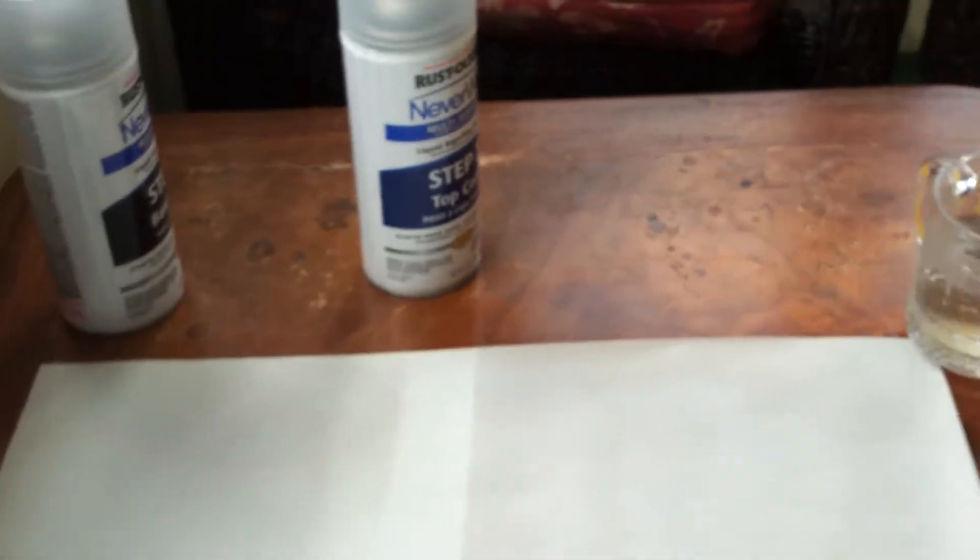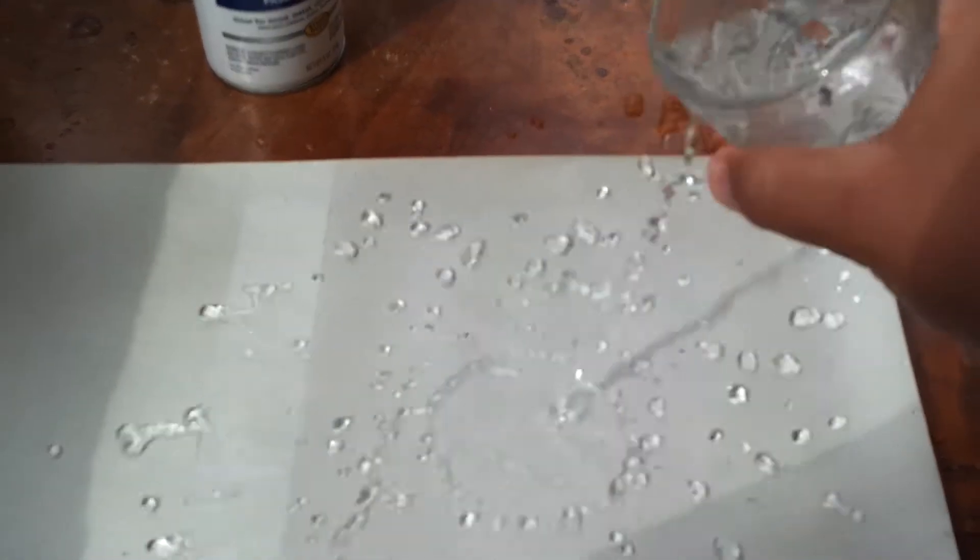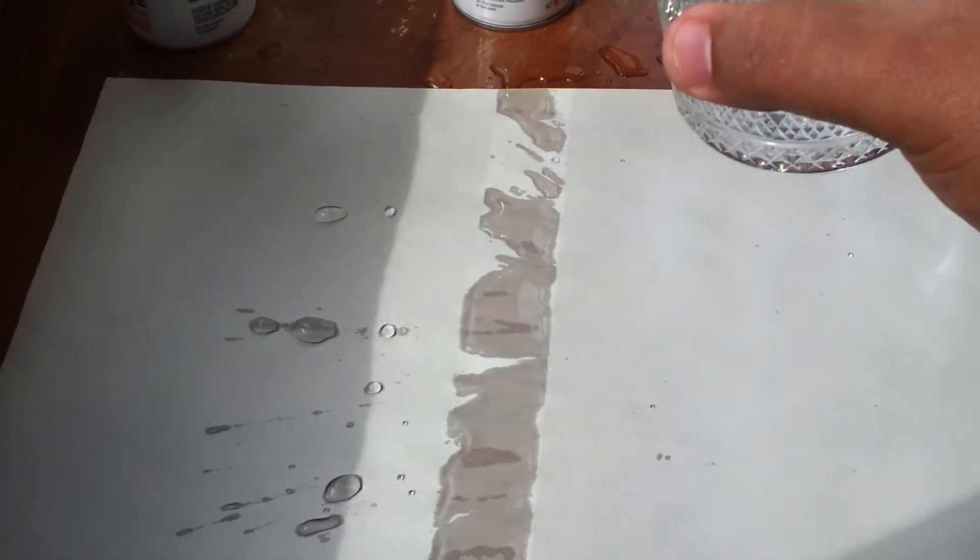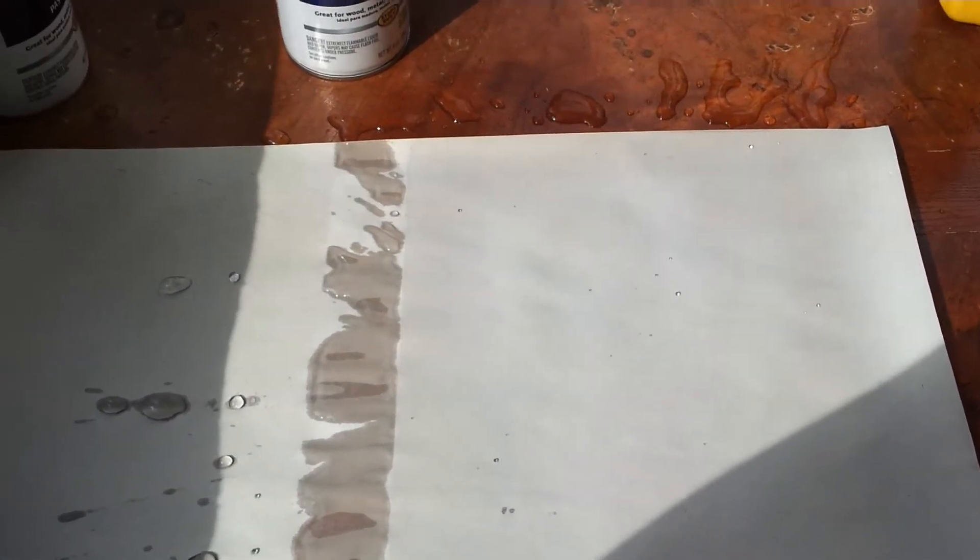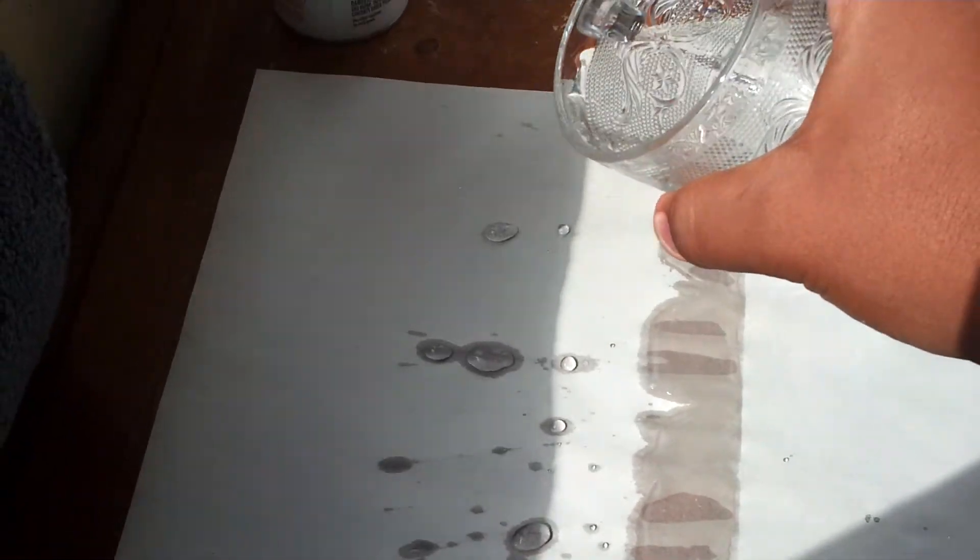check if this works. So there's some water here. I'm going to put some water on the surface. As you can see, the place where the Rust-Oleum is didn't get wet. The water goes off. Here we go, this is the